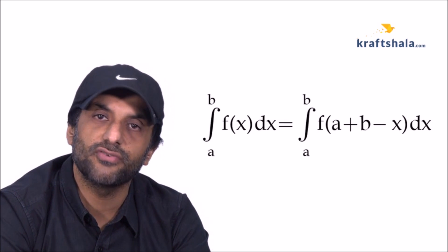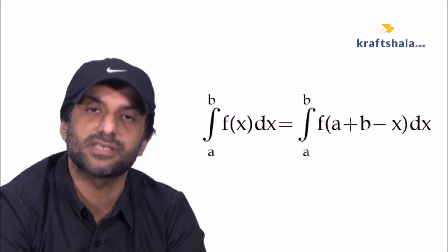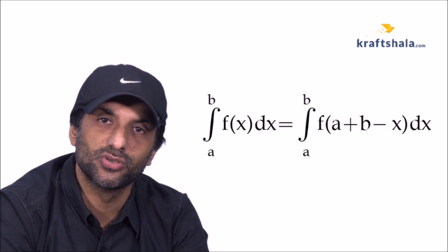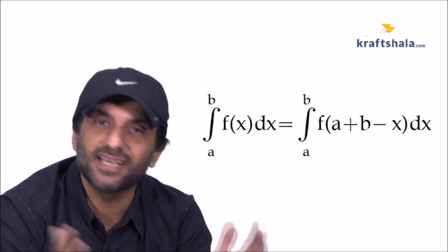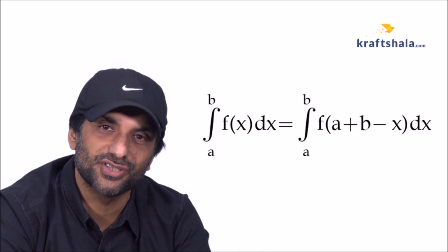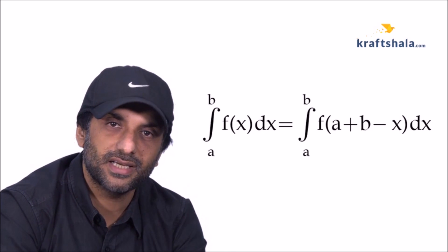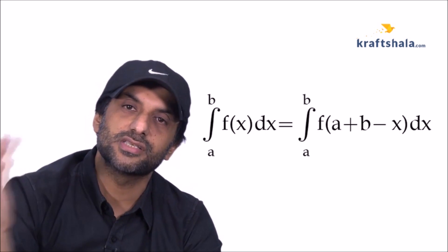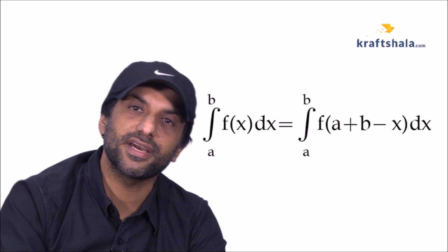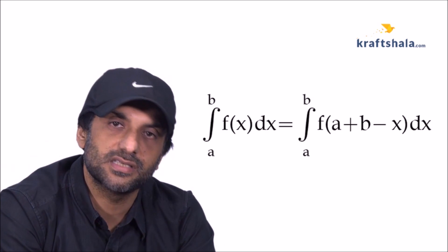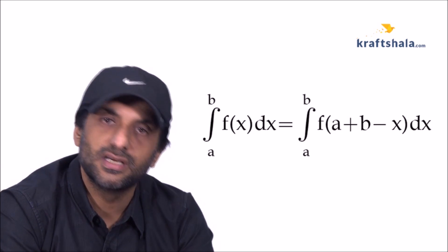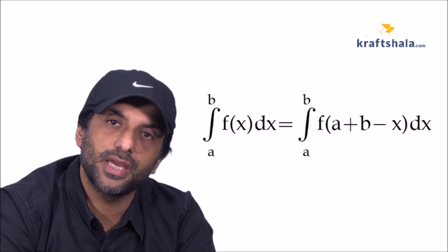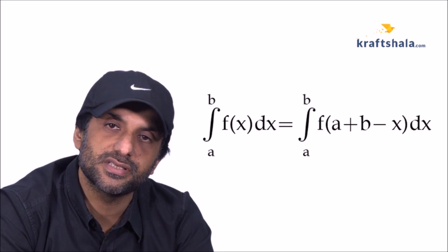The next property states that the integral from a to b of f(x) dx equals the integral from a to b of f(a + b − x) dx. This holds true for any continuous function in the given domain. You sum up the limits and subtract x from it, which gives the substitution a + b − x.